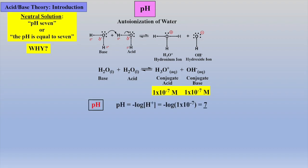Now, if we express the proton concentration as 1 times 10 to the minus 7 molar, most people will not even know what you are talking about. So, chemists decided to express this concentration in a much easier way. By simply taking the negative log of the proton concentration, we get the value 7. Thus, at pH 7, the proton and hydroxide concentrations are equal and therefore neutral.